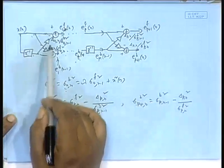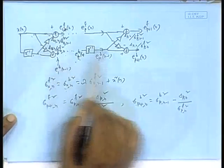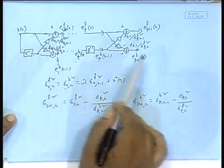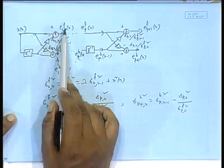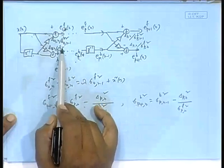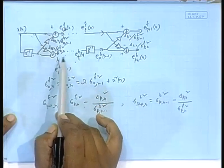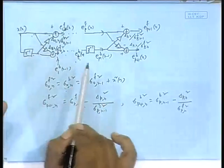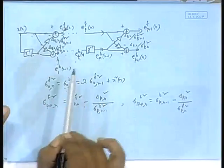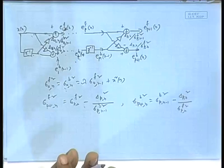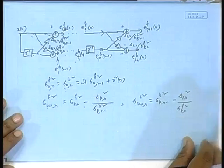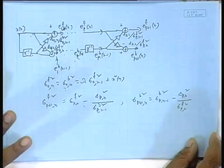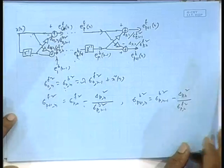Because at each index n, I am adapting the coefficients. Variances are updated order-recursively, and using the two prediction errors available with us and the past value of delta for that particular stage by some formula, we will be calculating the current value of delta. Now our main task remains: how to compute the current value, how to time-update delta. Let us spend some time on that.